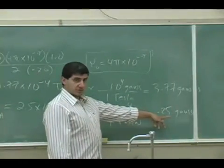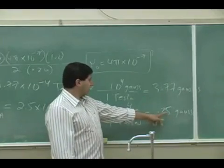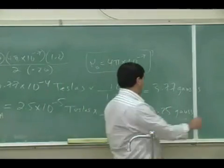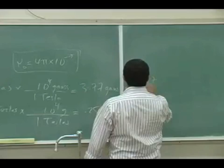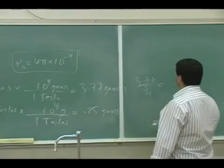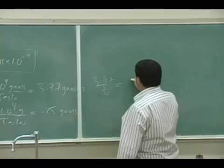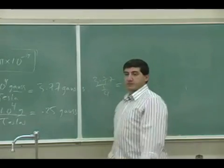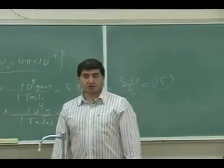The horizontal component by a factor of, if you divide these two, you get a number roughly of the order of something like 15 or something. So it's going to be 15 times stronger than the Earth's magnetic field.